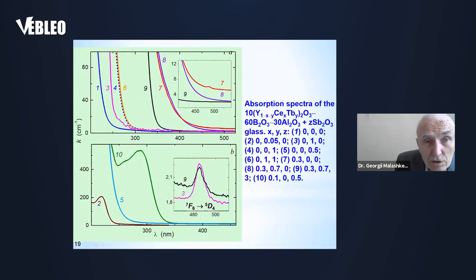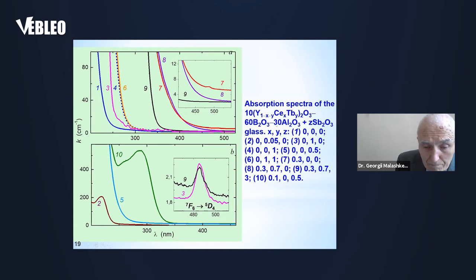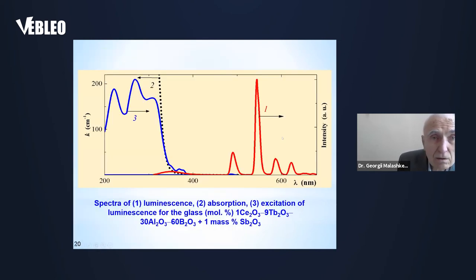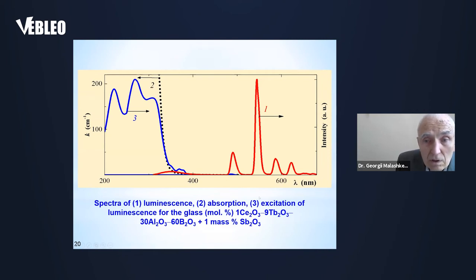Here you can see absorption spectra of the codoped glasses at different concentrations of the dopants, and their spectra of luminescence (Cv1), absorption (Cv2), and excitation of luminescence of the glass (Cv3) for the glass of this composition.